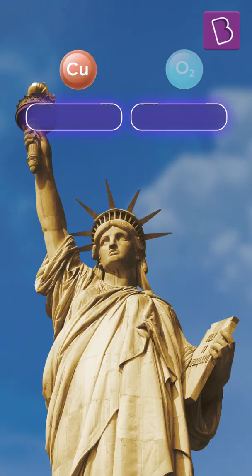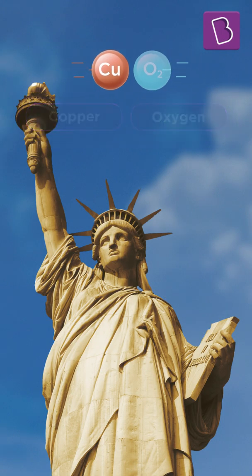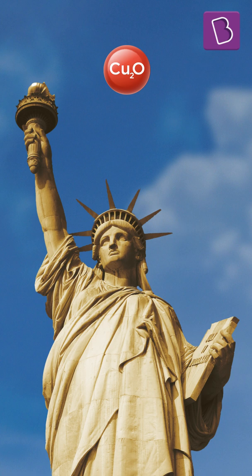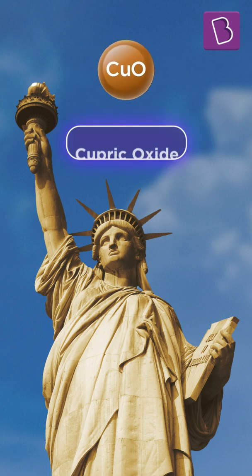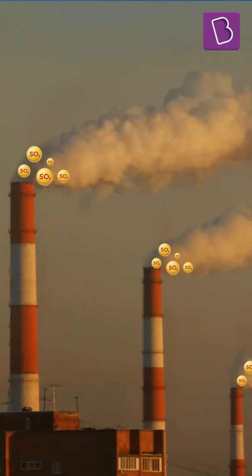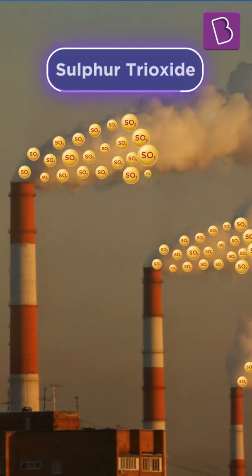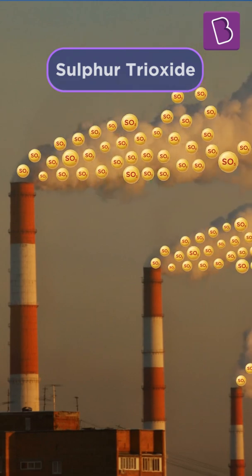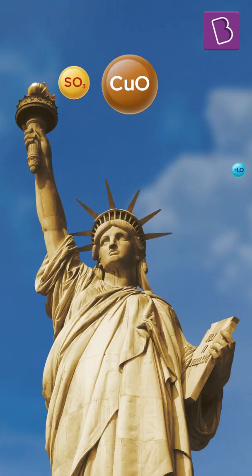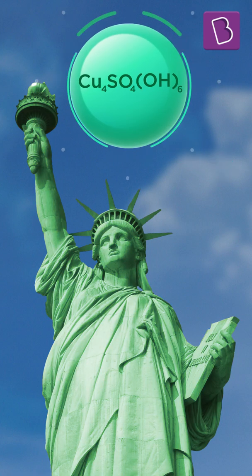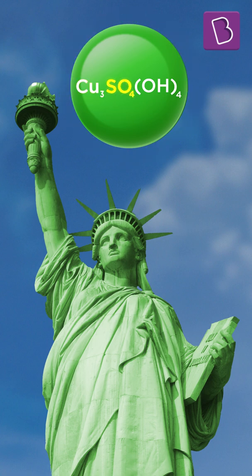Well, New York's air got to it. Copper oxidized first into a pinkish red cuprous oxide and further into a more stable but blackish cupric oxide. The polluted New York air contained sulphur trioxide, which combined with cupric oxide in the presence of moisture and formed blue-green and green minerals of copper and sulphate.